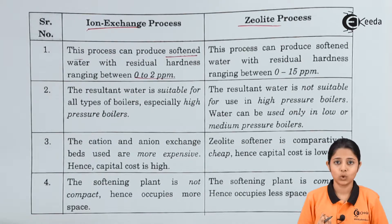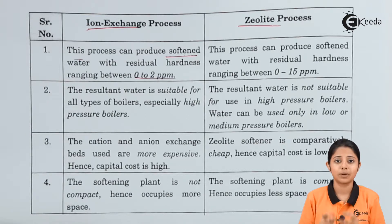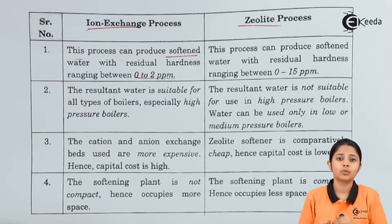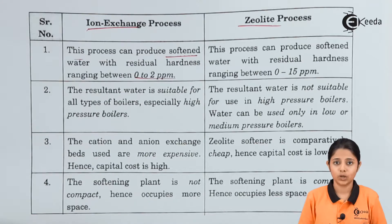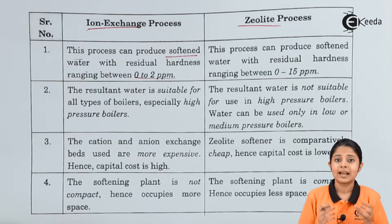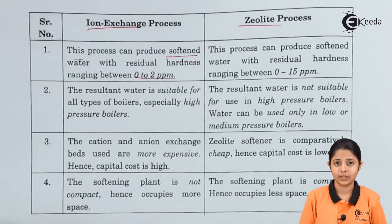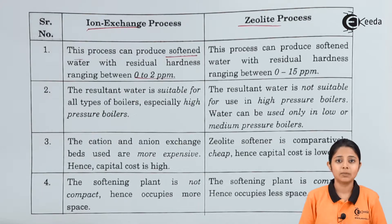Gases like CO₂ (carbon dioxide) and H₂S, which are present in water in dissolved form, are removed by the gas chamber. Once cations, anions, and gases are removed, the resulting product is soft water. This soft water will have impurities of 0 to 2 ppm — that is, for every million molecules of water there will be 0 to 2 parts of impurities.